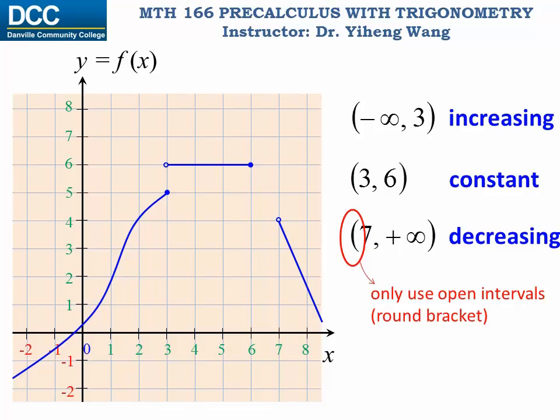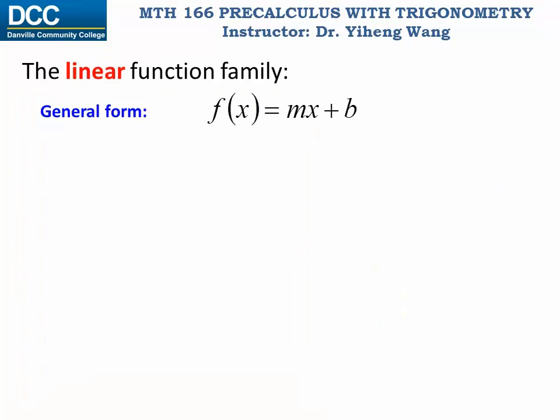Now we are ready to discuss the characteristics of some common parent functions. The simplest function family is the linear function. We know that the graph of a linear function is a straight line. The general form is f(x) equals mx plus b, where m is the slope and b corresponds to the y-intercept.